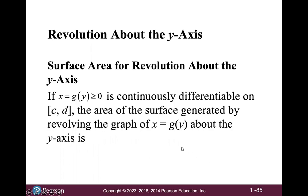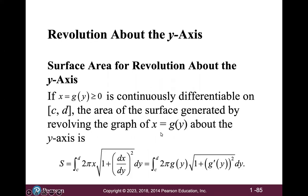And then for revolution about the y-axis, if x equals g of y is non-negative and is continuously differentiable on the interval from c to d, then the area of the surface generated by revolving the graph of x equals g of y about the y-axis is like this. So we're just substituting instead of functions of x, you have functions of y here.